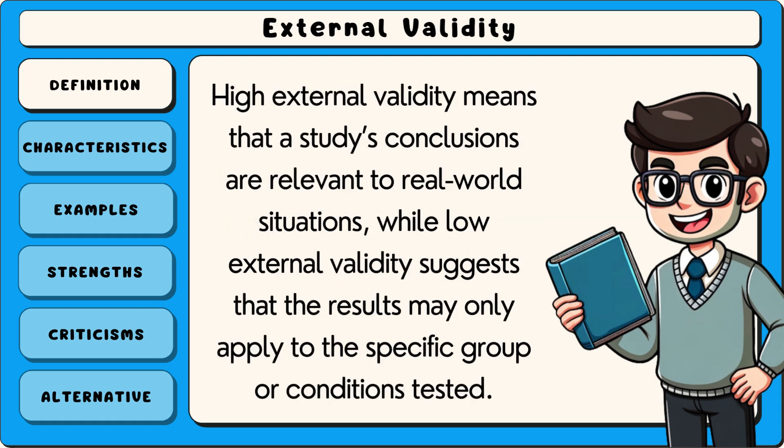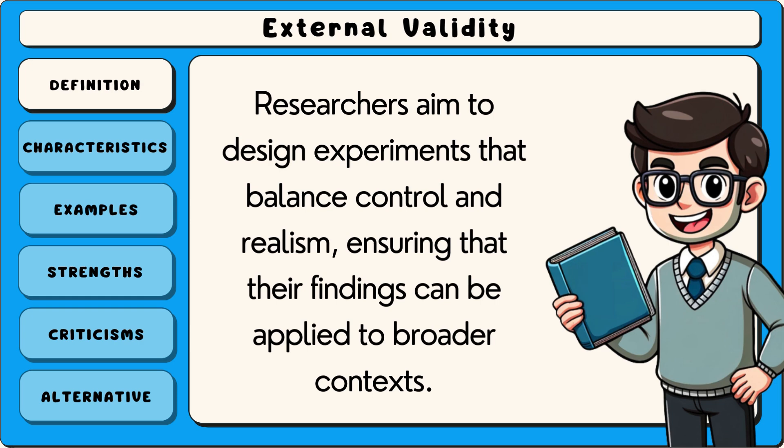High external validity means that a study's conclusions are relevant to real-world situations, while low external validity suggests that the results may only apply to the specific group or conditions tested. Researchers aim to design experiments that balance control and realism, ensuring that their findings can be applied to broader contexts.